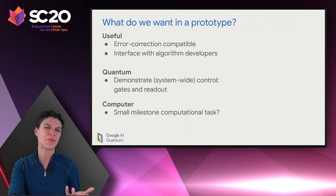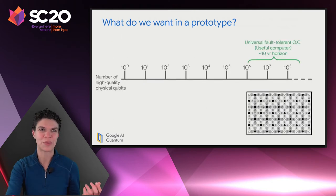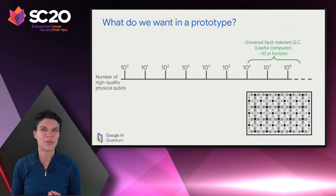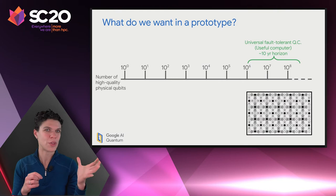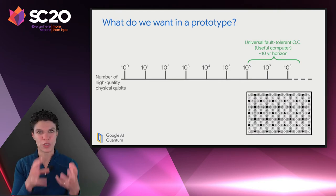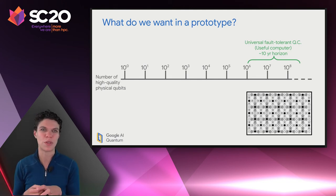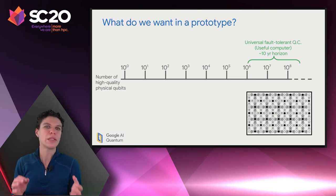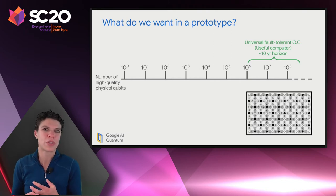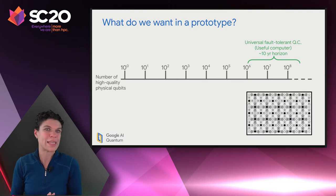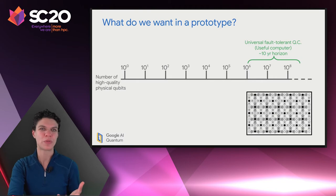So what do we want in our prototype? To build an error correction compatible prototype, we're interested in what's called the surface code approach to error correction. It has a checkerboard pattern of qubits — the data qubits are black dots and the measured qubits are white dots. We use the data qubits to actually store quantum information, and the extra qubits are overhead we use to perform parity measurements to track errors and compensate their effect. We need a lot of physical qubits to make one logical qubit — a fully fault tolerant universal quantum computer, which we expect will take at least a decade, will need around a million qubits.